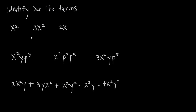So in other words, if I have x squared, 3x squared, and 2x, and I'm trying to identify which of these are like terms, the first thing I need to do is look for the same variable — the common variable. All three terms have the variable x, so you might say these are like terms, but we're not done yet. We have to make sure that they all have the same exponent as well.